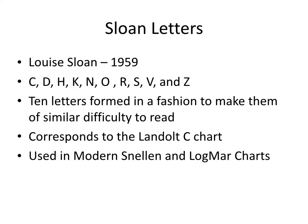In 1959, Louise Sloan devised what's now called Sloan letters — letters that are all of similarly equal difficulty to read, making charts more uniform. Those letters are C, D, H, K, N, O, R, S, V, and Z. Note that some letters such as G and Q are left out because they can be very difficult to read. It's thought to correspond to the more uniform Landolt C charts. These letters are used in the modern Snellen chart and also in the LogMAR chart.